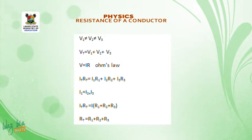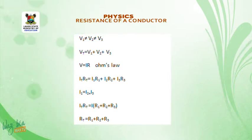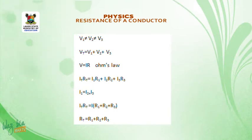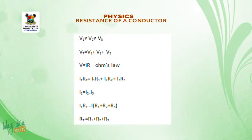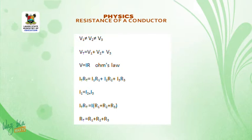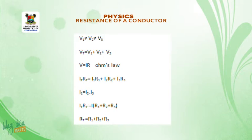Since I1 equals I2 and I2 equals I3, I is common. Therefore, resistors connected in series give: RT equals R1 plus R2 plus R3. That is the formula for resistors in series.